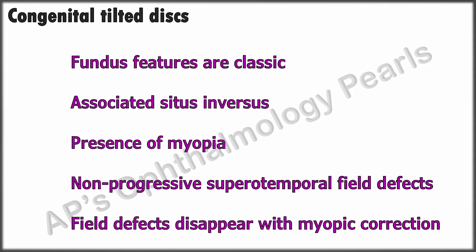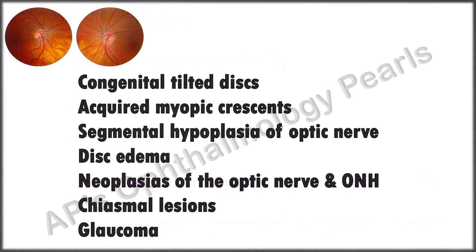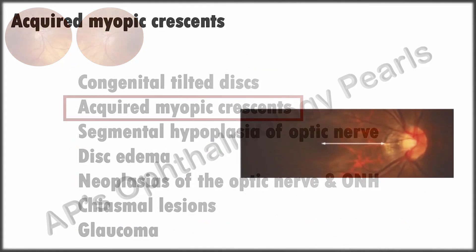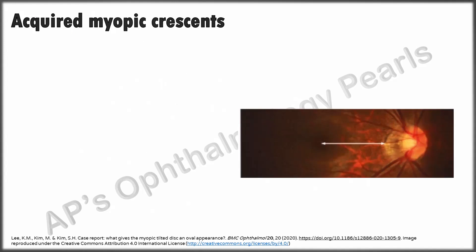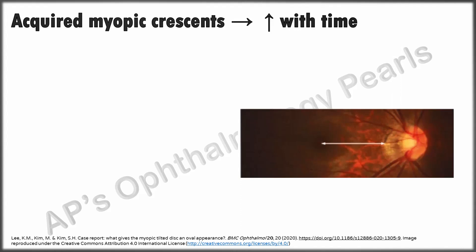All these features, combined with the history of being told that there was a retinal abnormality at infancy even before the myopia developed, are strongly in favor of congenital tilted discs. Acquired myopic crescents can resemble tilted discs, and the situation is compounded by the fact that most patients with a tilted disc have myopia. Typically, myopic crescents are seen temporally in 80% of cases, whereas the crescents of tilted discs are inferonasal in about 65% of cases.